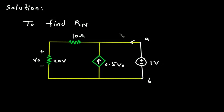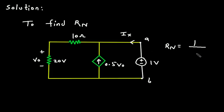Let's say this is current Ix. So from this, Rn will be equal to 1V divided by Ix. To find Rn we have to find the value of Ix.